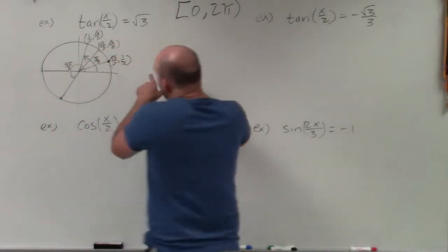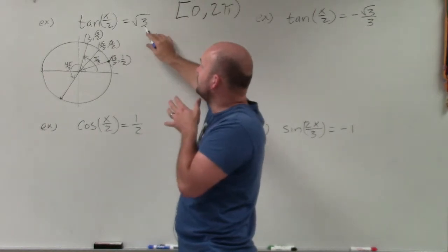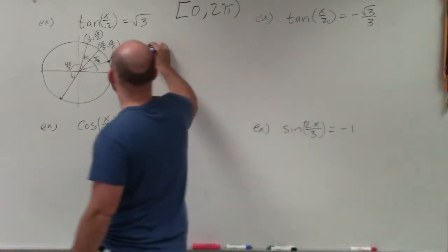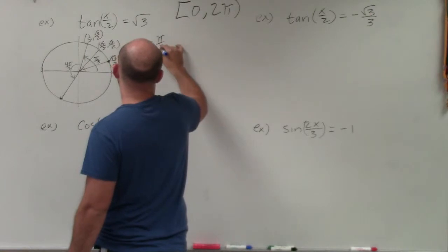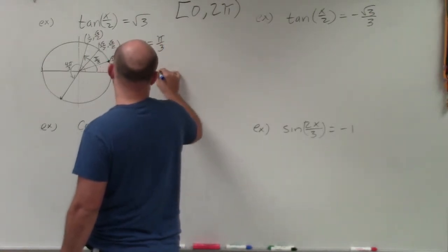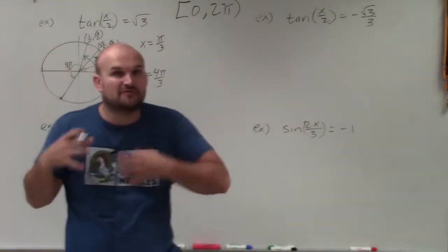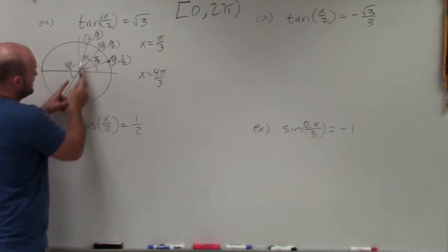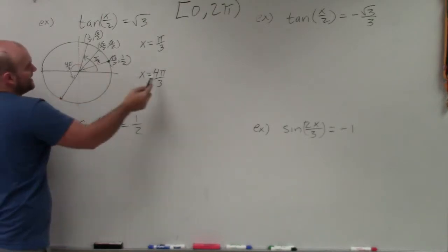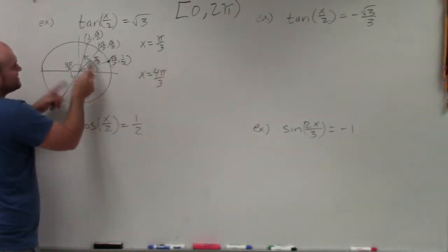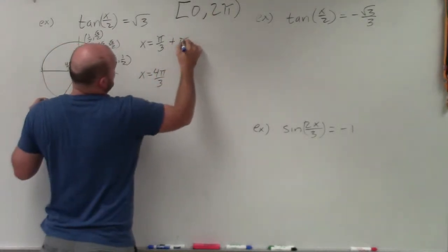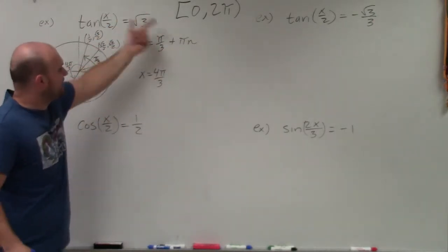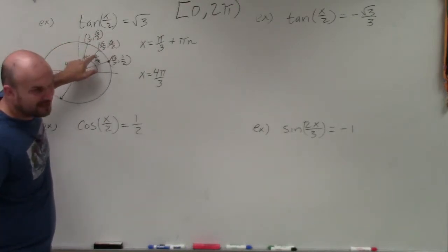Remember, tangent is not only equal to positive √3 in the first quadrant, but also in the third quadrant. That gives us π/3 and 4π/3 as our two solutions. Since these two angles differ by π, rather than always adding 2πn to both, I can just add πn starting from π/3. Adding π to π/3 gives 4π/3, and adding π again brings us back to π/3.